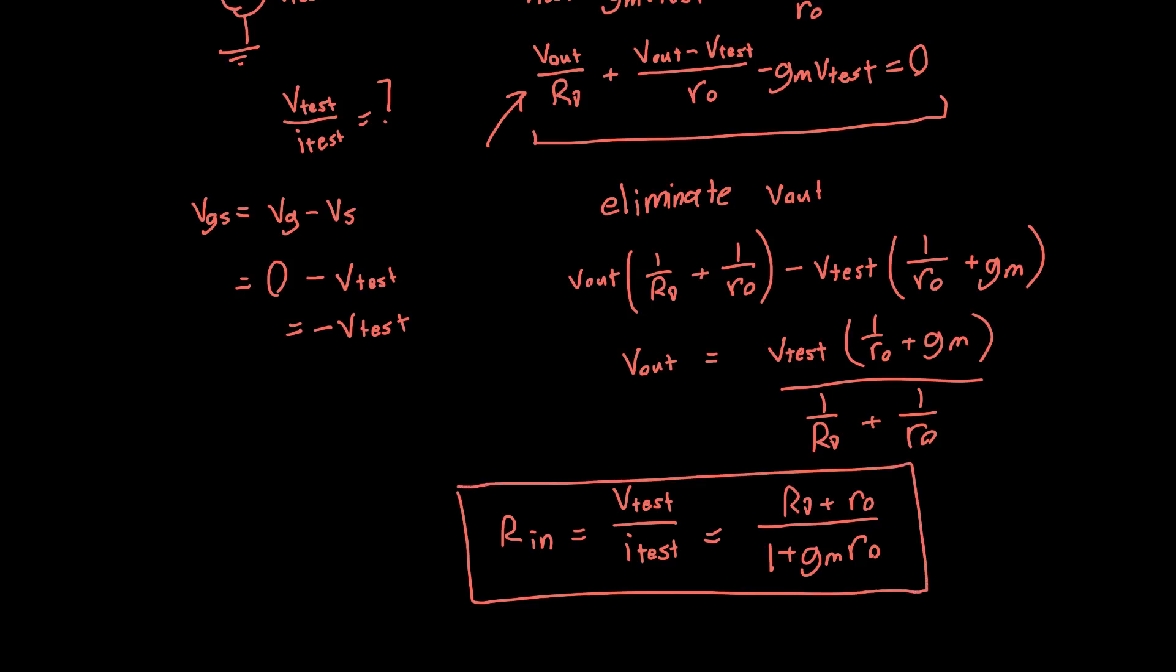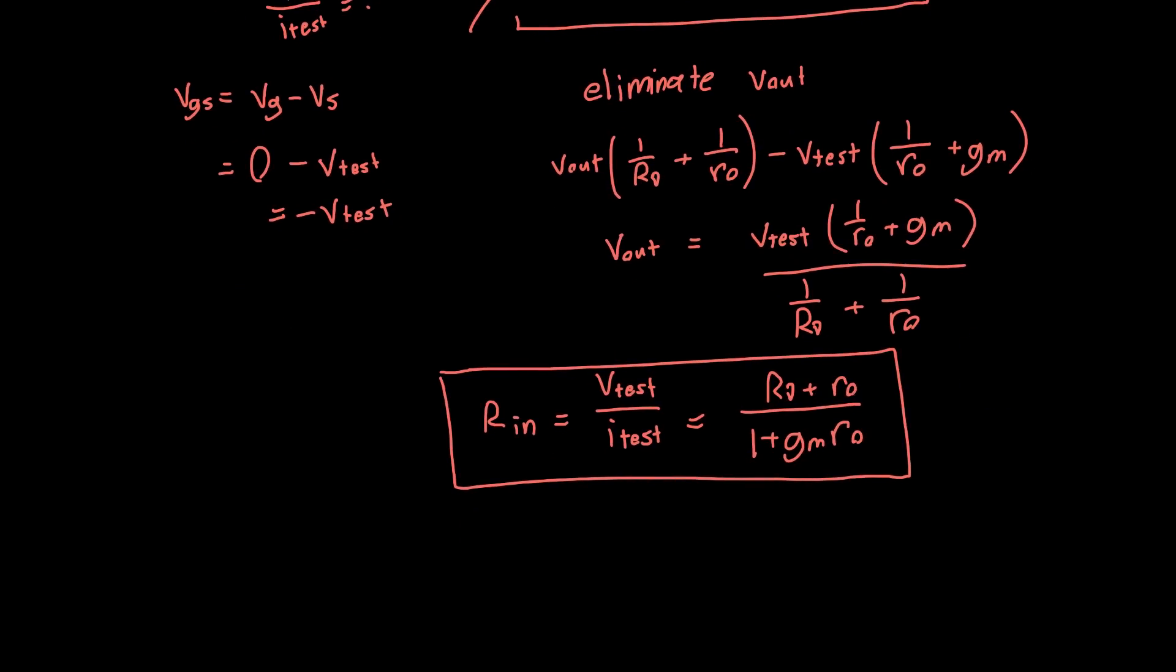But that's interesting, because previously we just said that our old input resistance was just 1 over GM, and this looks nothing like that. Under what conditions is this the same as our old answer? Well, we'd expect it to be when RO is very large, when we can ignore RO.